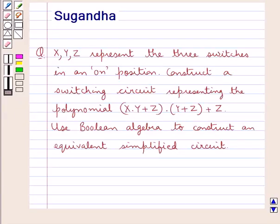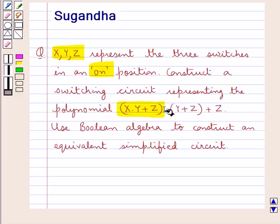Hello and welcome to the session. In this session we discuss the following question: x, y, z represent the three switches in an on position. Construct a switching circuit representing the polynomial x into y plus z, the whole, into y plus z, the whole, plus z. Use boolean algebra to construct an equivalent simplified circuit.